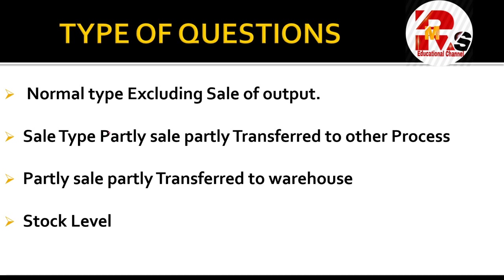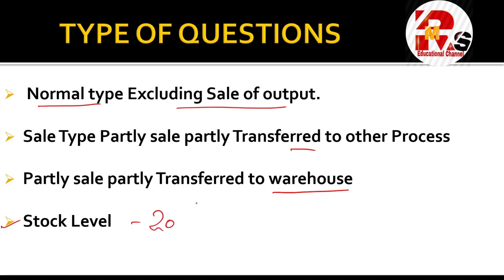There are different types of questions in process costing. The first type is Normal Type — excluding sale of output, meaning the output of one process is transferred to the next process without sale information. The second type is Sale Type — partly sale and partly transfer to another process or warehouse. The third important level involves stock, which is also discussed and carries significant marks.